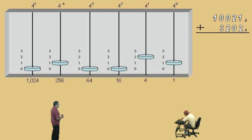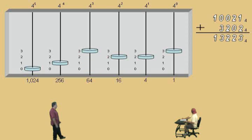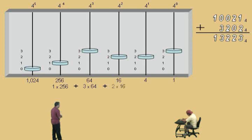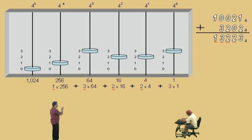To this base four number, we're going to add 3, 2, 0, 2 base four. Again, it's just basic addition — two and one is three, two and zero is two, zero and two is two, zero and three is three, and we have a one. Notice we have one of these 256s, three of these 64s, two of these 16s, two of these fours, and three of these four to the zeroes, which is three ones. There's our digits: one, three, two, two, three. Multiply and add all those up, you do get 491 base ten.